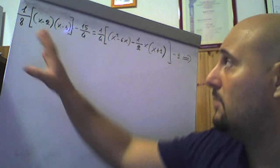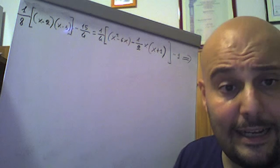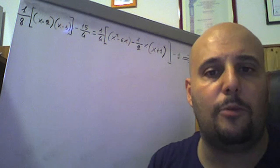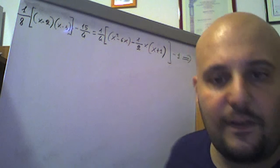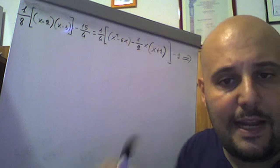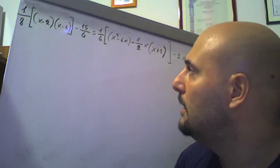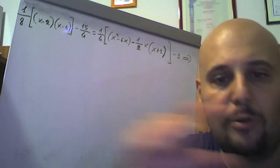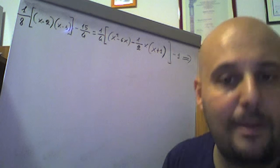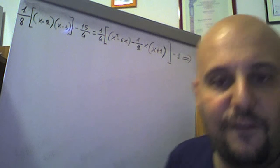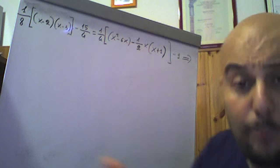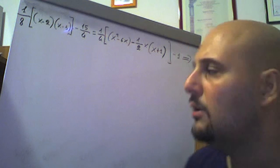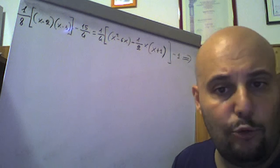Come vi ho detto tante volte, l'equazione è un'equazione intera a coefficienti sia interi che frazionari. Quando sono presenti dei coefficienti frazionari, come vi ho fatto vedere nel video precedente numero 6, c'è un trucchetto per eliminare queste frazioni, per avere un'equazione lineare intera a coefficienti interi. Prima dobbiamo effettuare i prodotti e poi applicheremo questo piccolo trucchetto. Questo sarà il video numero 7.